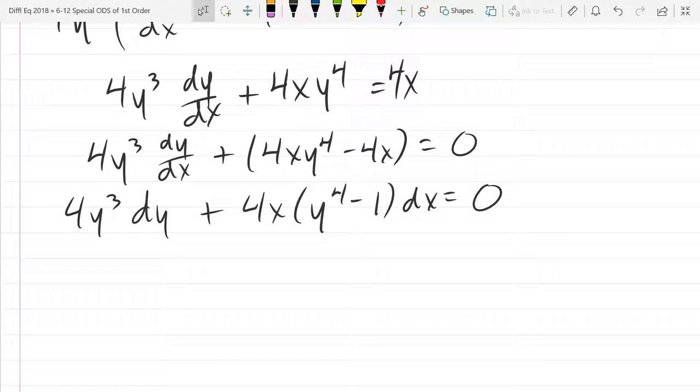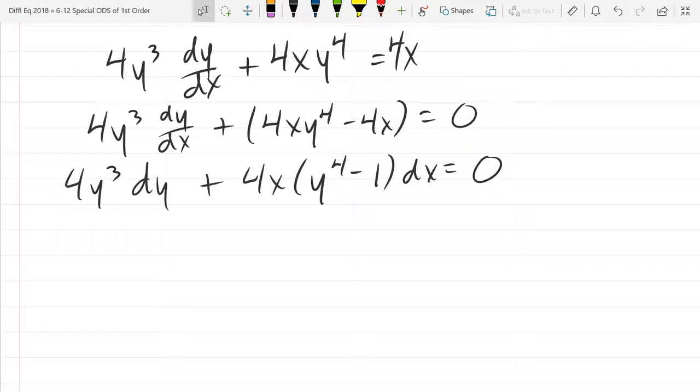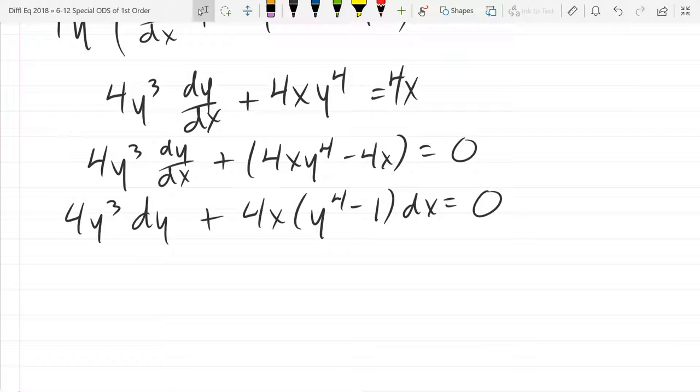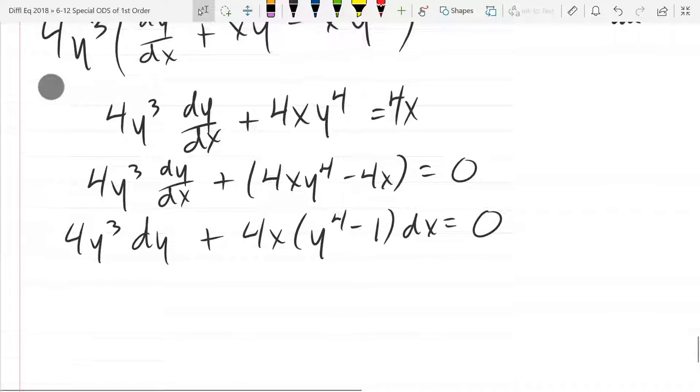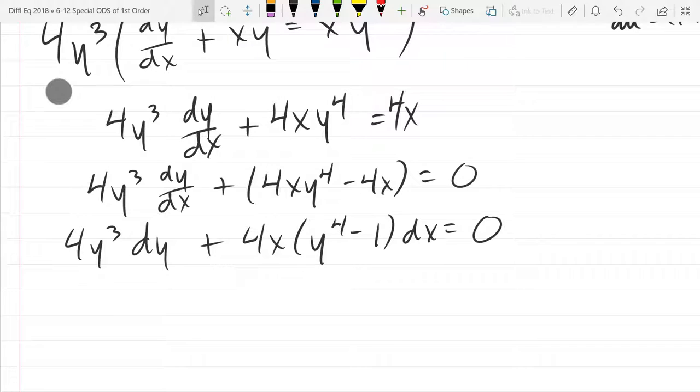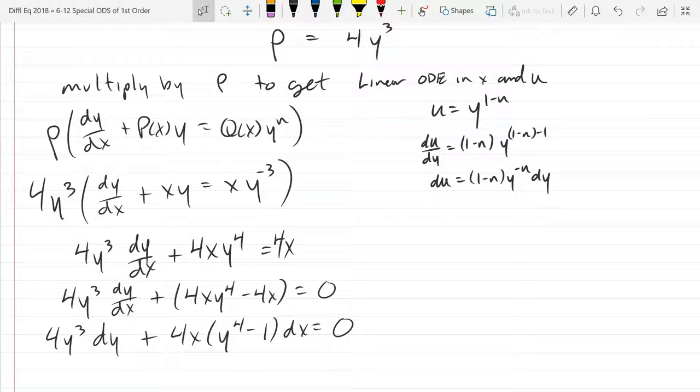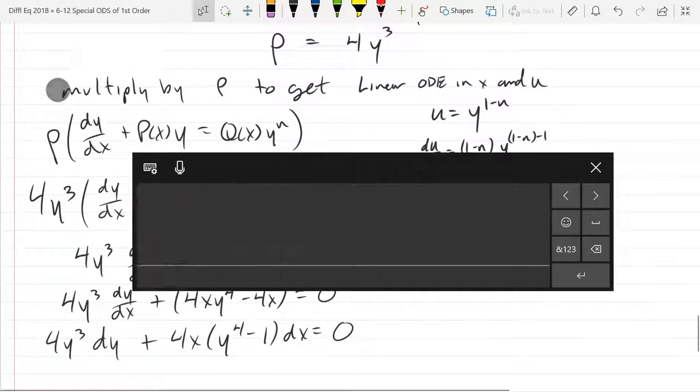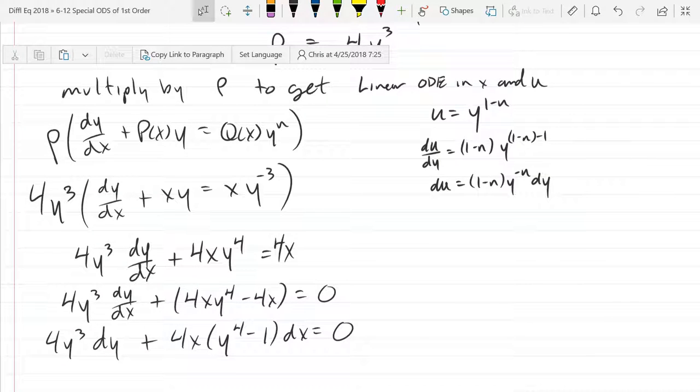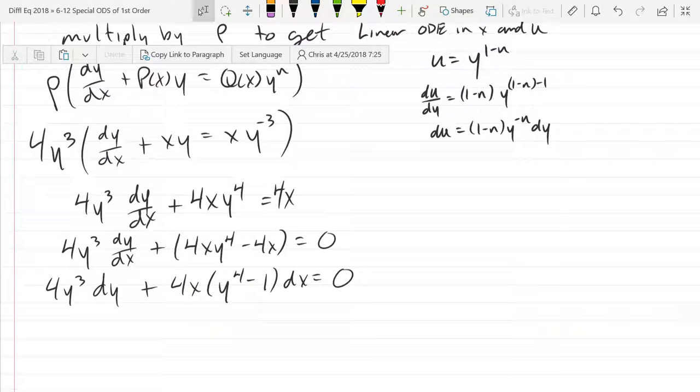Now, one thing you'll notice, basically, you're going to cancel out the y on the right side when you do this. That should happen every time. So we got 4y cubed dy/dx plus 4xy to the fourth equals 4x. Now, you might think, oh, we don't really need the 4. Technically correct, but we're going to leave it in. You could multiply by 4 right now. I'm not going to, but I will subtract 4x and then we'll multiply by dx. Let's not do too much at one time.